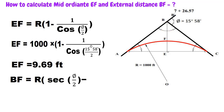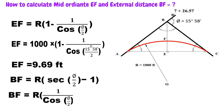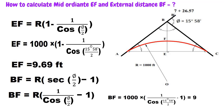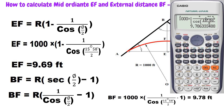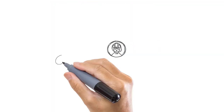For the external distance BF, we use the relation: BF = R × (sec(Δ/2) − 1), which is equivalently R × (1/cos(Δ/2) − 1). Putting in the values — radius 1000 feet, deflection angle 15 degrees 58 minutes — by calculation the external distance BF equals 9.78 feet.